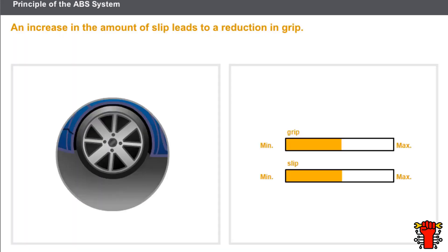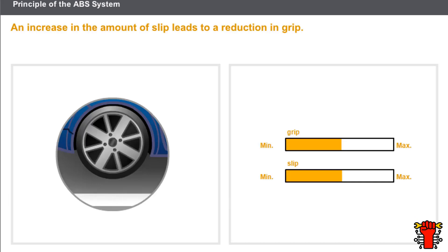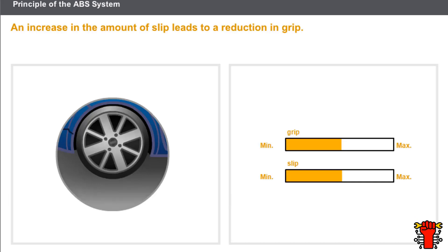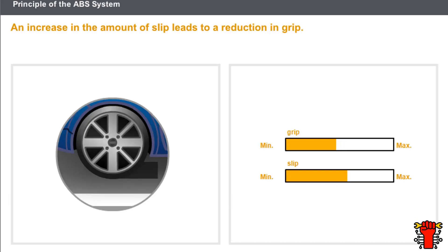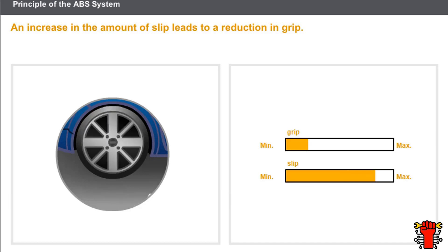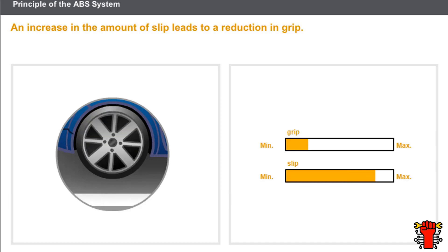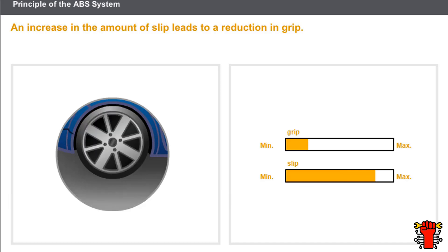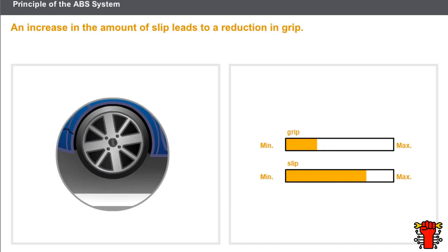Grip allows the transmission of forces between the tyre and the road surface. Slip, in contrast to grip, does not allow the transmission of forces. An increase in the amount of slip leads to a reduction in grip. Slip and grip are totally linked.